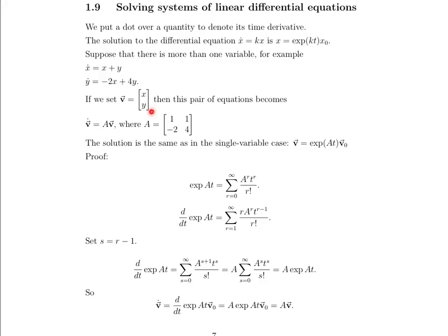So if we set v equal to the vector x, y, then this pair of equations becomes, well, dv dt is going to equal our matrix A here times v. So we basically strip the coefficients away from the system of equations and put them into A. And the solution ends up being the same as in the single variable case, where v itself is e to the at times some constant vector v naught.